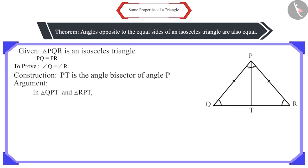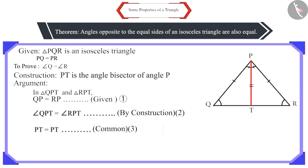Draw the bisector of angle P which intersects the side QR at point T. Now, look at triangles QPT and RPT. It is given that side QP and side RP are equal. By construction, PT is the bisector of angle QPR. Therefore, angle QPT and angle RPT will be equal. And side PT is the common side for both the triangles.